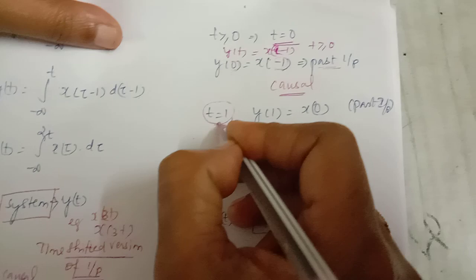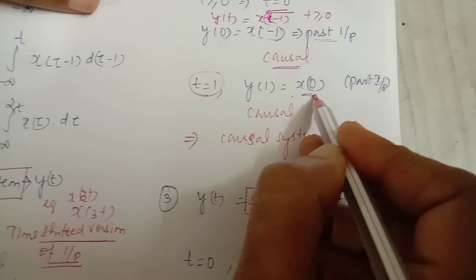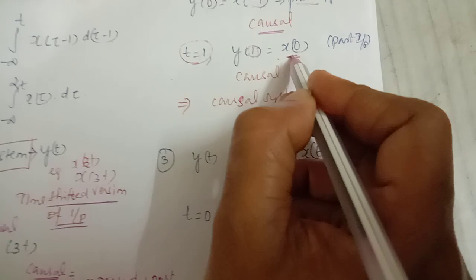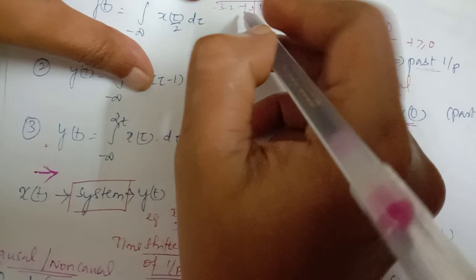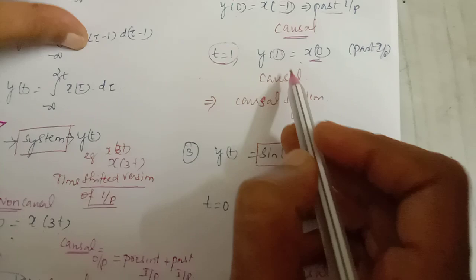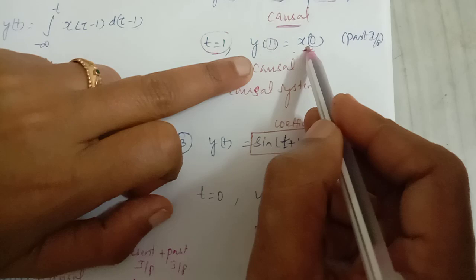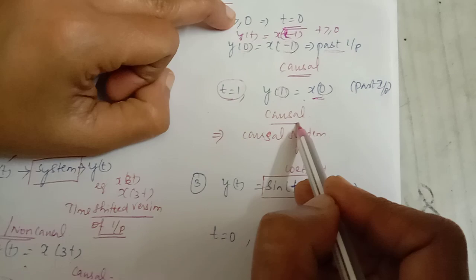We also check for t > 0, taking t = 1. Then y(1) = x(1 - 1) = x(0). On a timeline, 0 is a past value relative to the present t = 1, since future values for t = 1 are 2, 3, etc., and past values include 0 and below. So the output at t = 1 depends on a past value of input, confirming the system is causal.